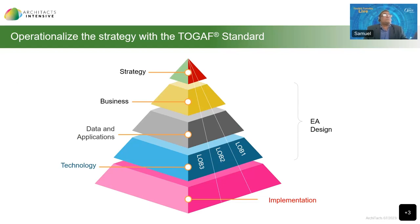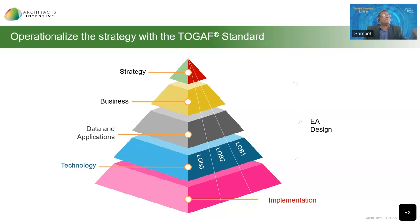The first benefit is operationalizing your enterprise or business strategy. The TOGAF standard can be used to fill the gaps between business strategy at the top and the implementation at the bottom, by defining these interfaces in between — the business, data, application, and technology components. Not only does it help you define the architectures for these four domains, but also helps you carry out the actual implementation, making sure that the implementation is aligned with the actual specification.